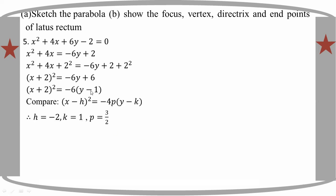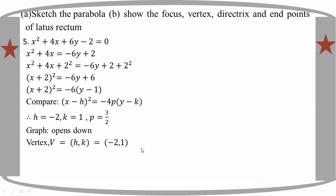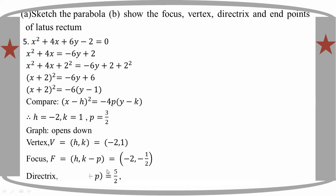S is minus 2, k is 1. 4p is 6, p is 3 by 2. Then S is minus 2, k is minus 2, 1. 4p is minus 2, so p is minus 1 by 2. The right trip: 1 to k minus k plus k, and 2 to k, giving 3 by 2, meaning 5 minus 2.